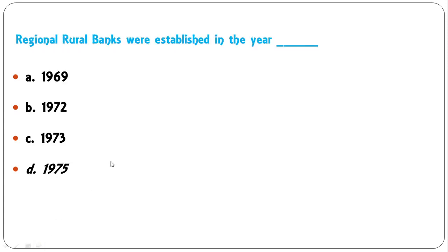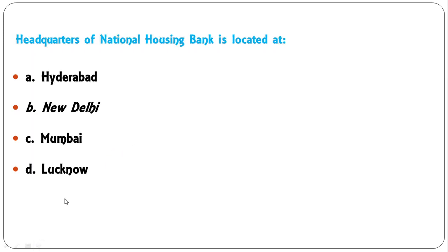Regional rural banks were established in the year: 1969, 1972, 1973, or 1975. RRBs were established in 1975. Headquarters of National Housing Bank is located at: Hyderabad, New Delhi, Mumbai, or Lucknow. It is located in New Delhi. B is the correct answer.